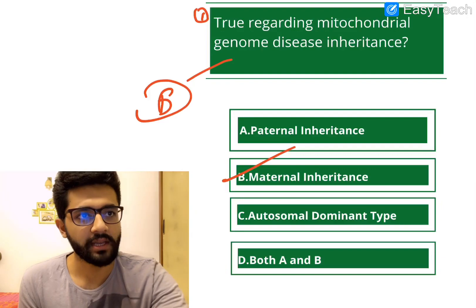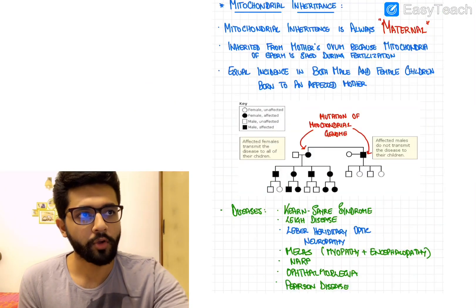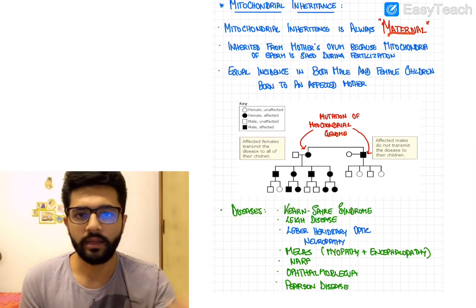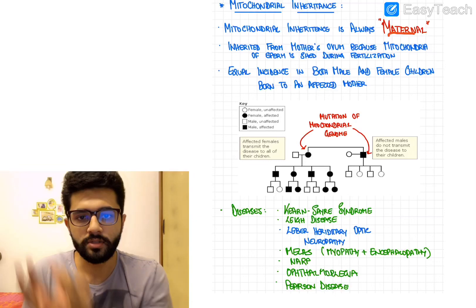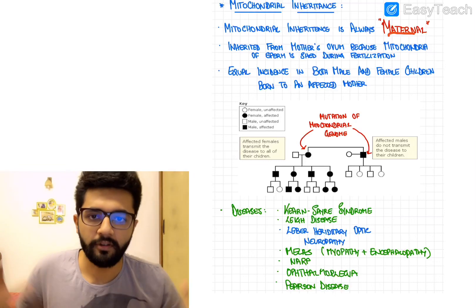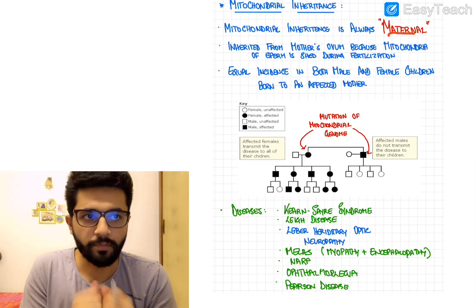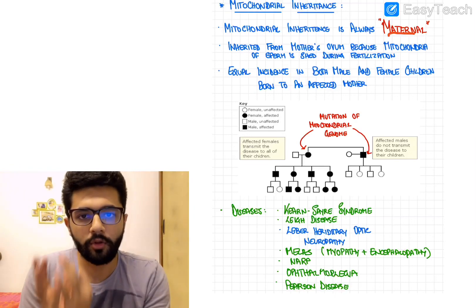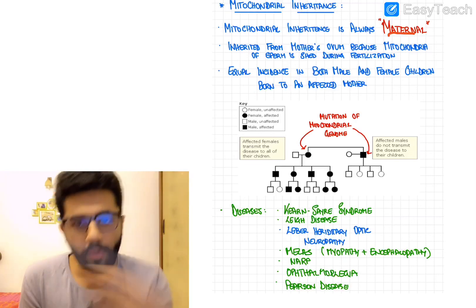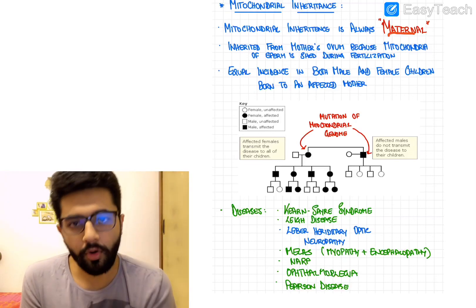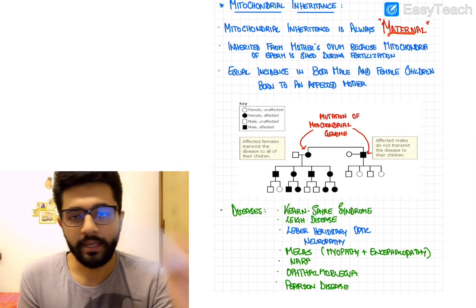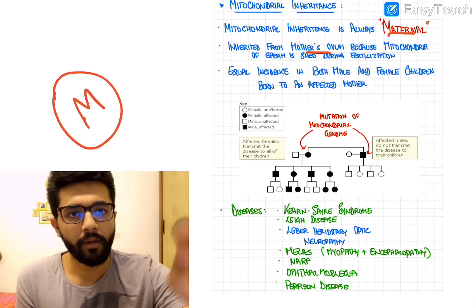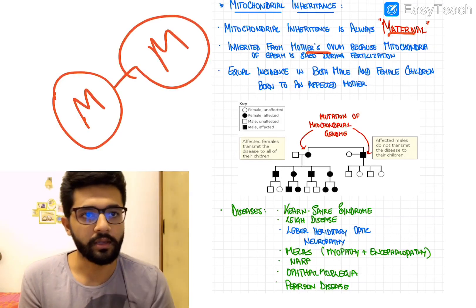Mitochondrial inheritance is always maternal. It is inherited from the mother's ovum because during fertilization most of the sperm's mitochondria are shed or utilized, and only the mother's ovum's mitochondria remain. So mitochondrial diseases, which result from a mutation in the mitochondrial genome, can only be derived from the mother's ovum. Remember: M for M — mitochondrial is always maternal in origin.